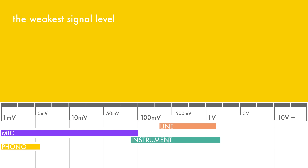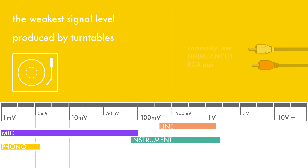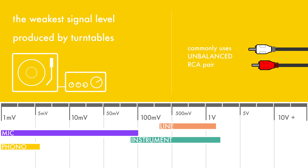The weakest signal level of all is produced by turntables used to play vinyl records. Phono signals need to be connected to special phono preamps that amplify that tiny signal to line level and equalize it, in order to compensate for the physical limitations of the medium, basically boosting the bass and attenuating the high frequencies.